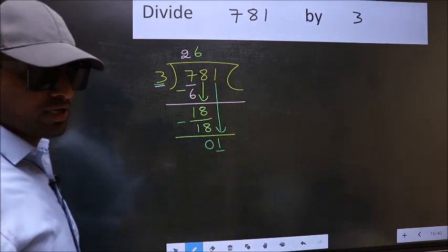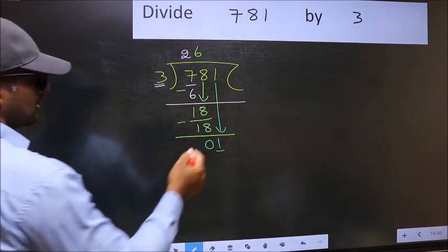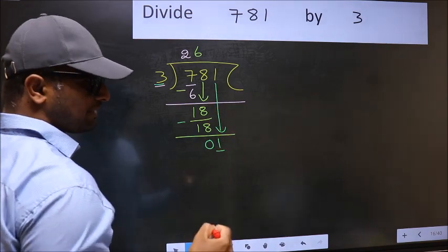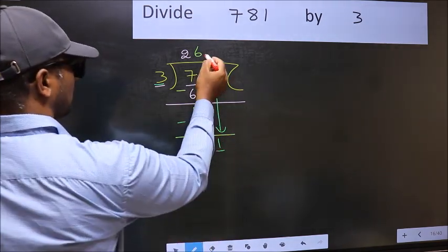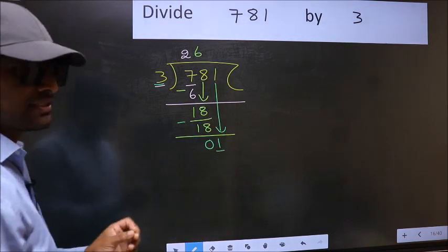Which is wrong. Why is it wrong? Because just now you brought this number down. And in the same step, you want to put a dot and take 0. Which is wrong.